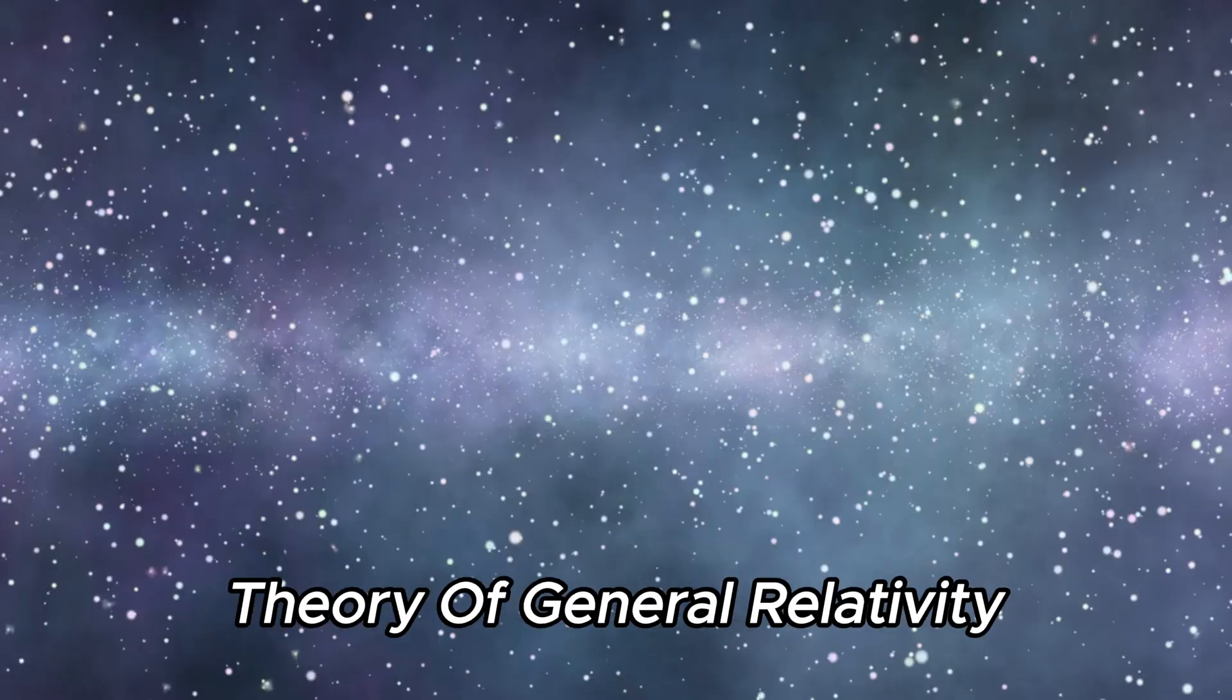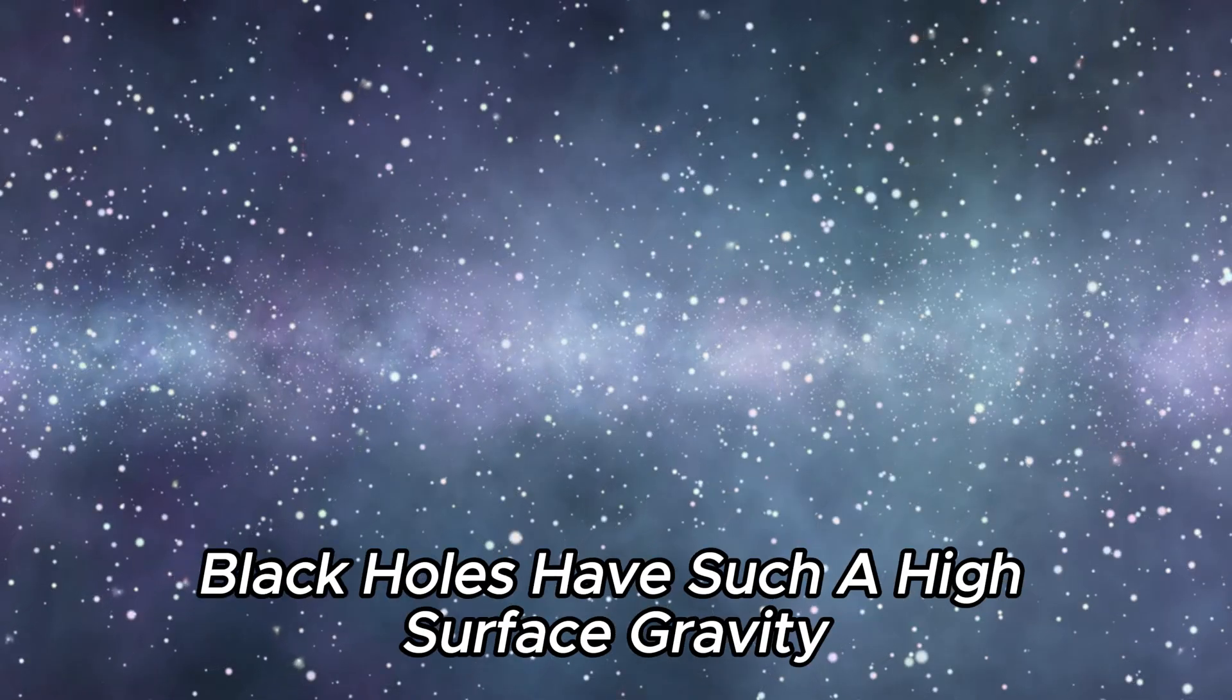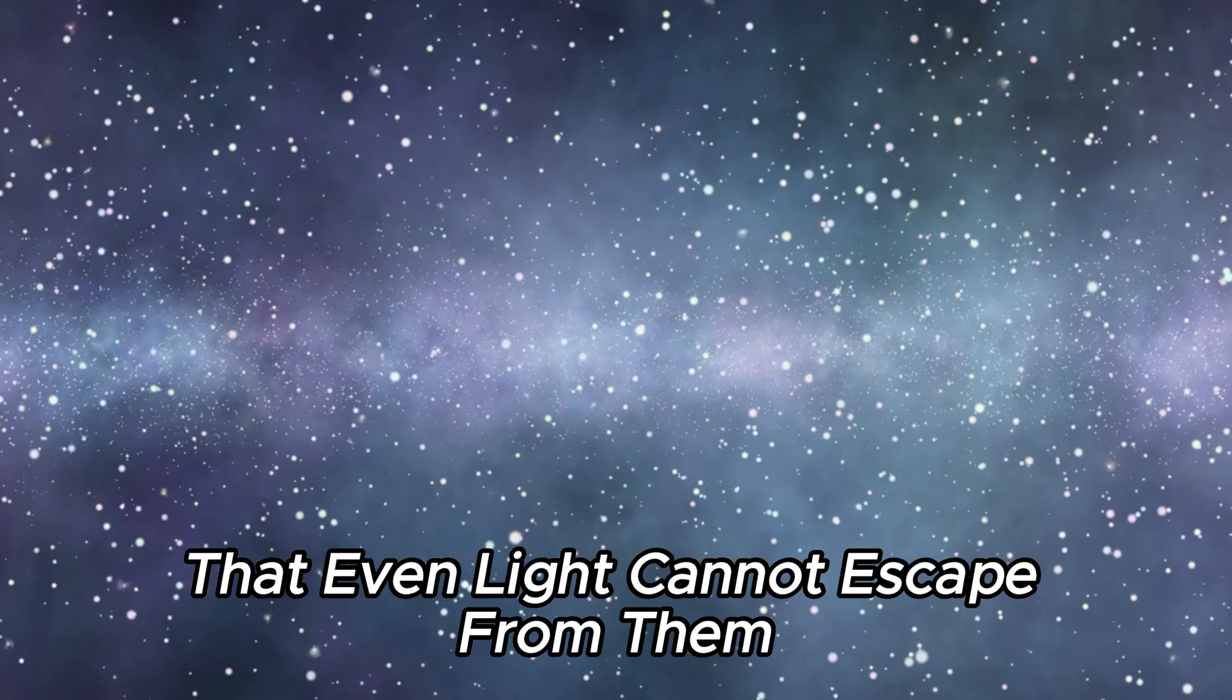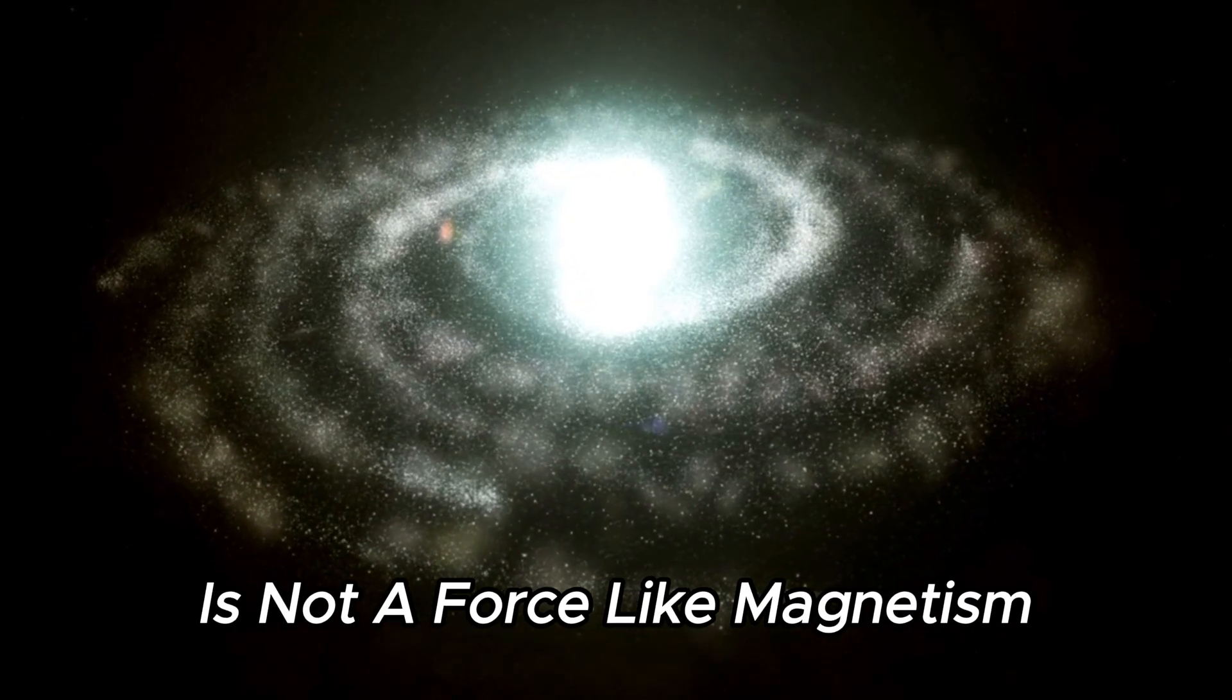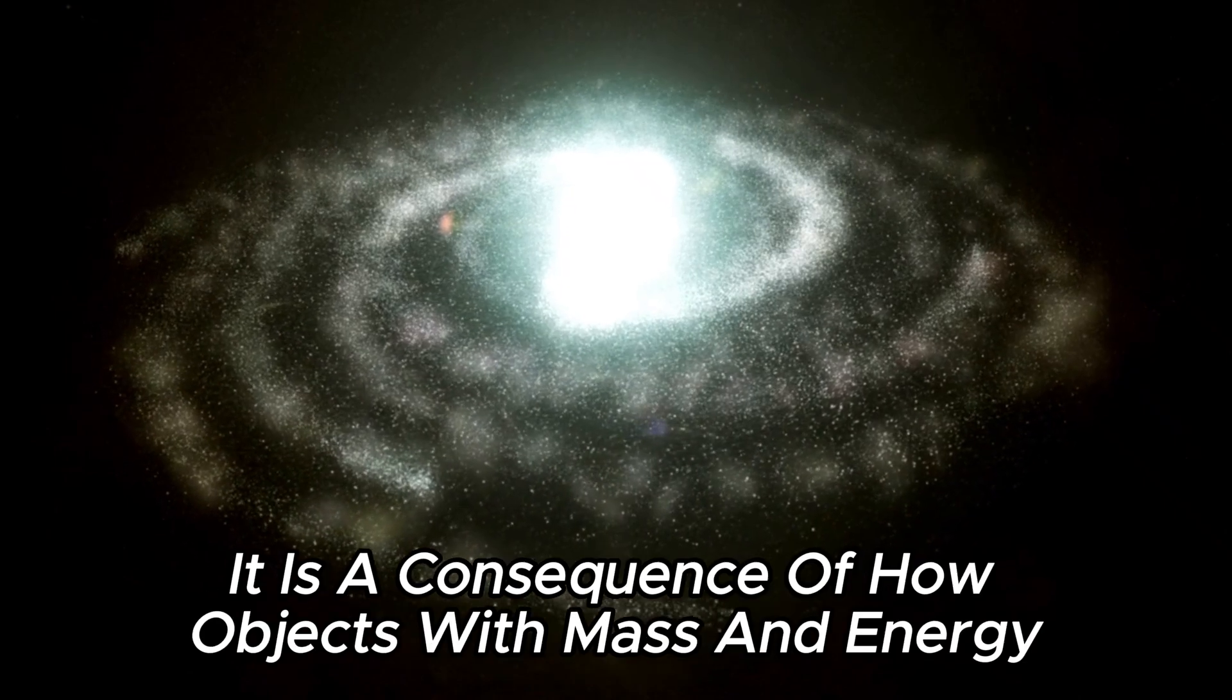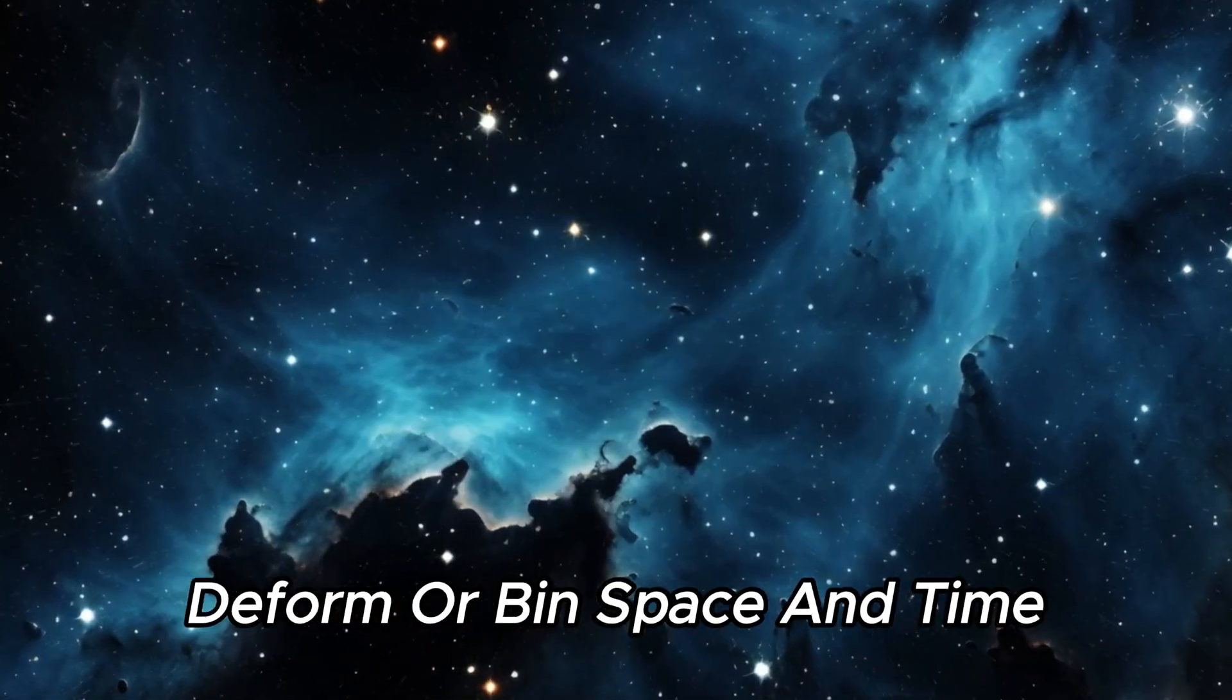According to Albert Einstein's theory of general relativity, black holes have such a high surface gravity that even light cannot escape from them. Gravity, as described by Einstein, is not a force like magnetism. It is a consequence of how objects with mass and energy deform or bend space and time.